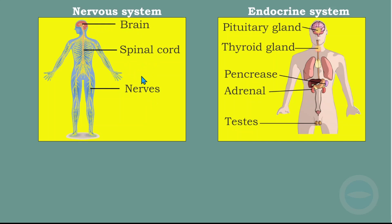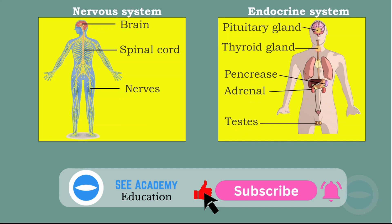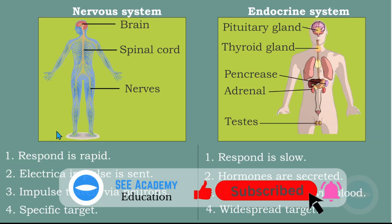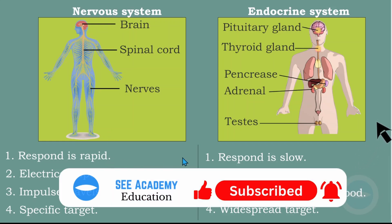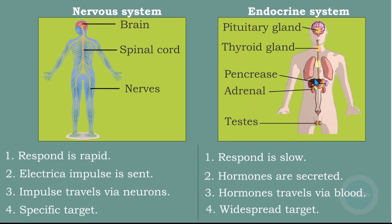The difference between the nervous system and the endocrine system: with the nervous system, the response is rapid — they respond very quickly. In the endocrine system, the response is very slow because hormones must be secreted into the blood and travel through it. The nervous system uses electrical impulses that travel via neurons, while the endocrine system uses hormones that travel via blood — which is why it is so slow.